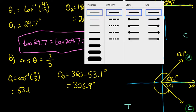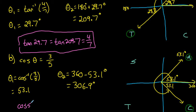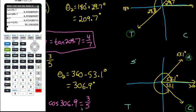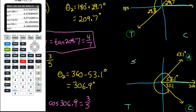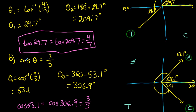So cos of 53.1 should be the same as cos of 306.9, and they should both be equivalent to about 0.6. Let's double check: cos of 53.1 is the same as cos of 306.9 — they're the exact same — and they're both equal to 3 over 5, which is 0.6. Keep in mind, there are an infinite number of possible angles with given ratios; you can find coterminal angles by repeatedly adding or subtracting 360. But between 0 and 360, there are always two possible angles that share the same cosine, tan, or sine ratio.